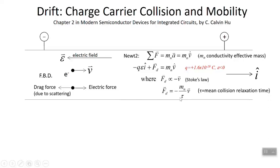Tau is a new parameter, the mean collision relaxation time, which you can just think of as the average time between collisions. Electrons move along through the semiconductor and occasionally collide with a phonon, with a vibration mode of an atom. The average time between all those collisions is tau.